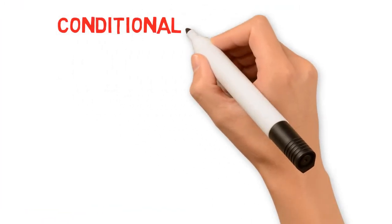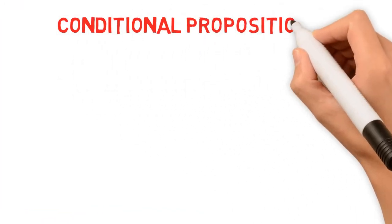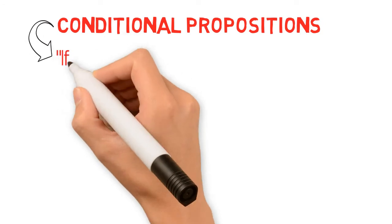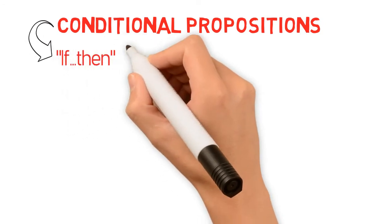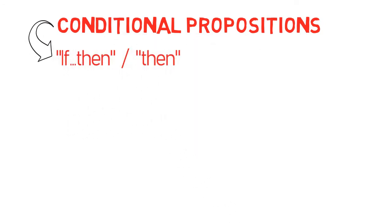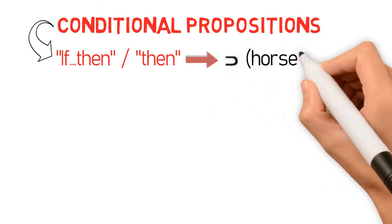Conditional propositions are compound propositions connected by the words 'if...then,' or just 'then.' And as we learned in the previous discussion titled Propositions and Symbols Used in Symbolic Logic, the symbol for 'if...then' is the horseshoe.